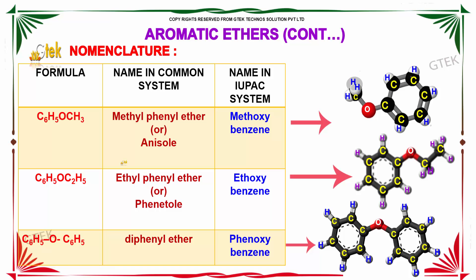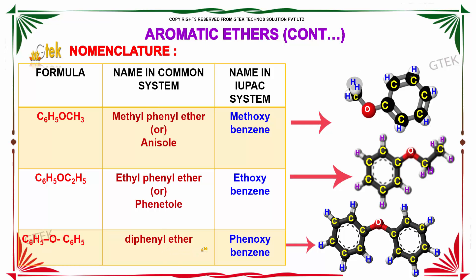For the formula C6H5-O-C6H5, the name in the common system is diphenyl ether, whereas the name in the IUPAC system is phenoxybenzene.